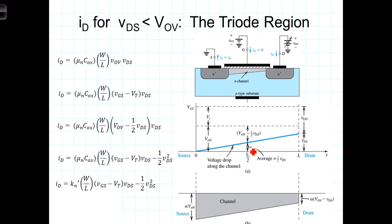That's with the drain voltage small. And under those circumstances, we determined that the current flowing was given by this equation. It's proportional to VOV and VDS, so this is for small VDS.